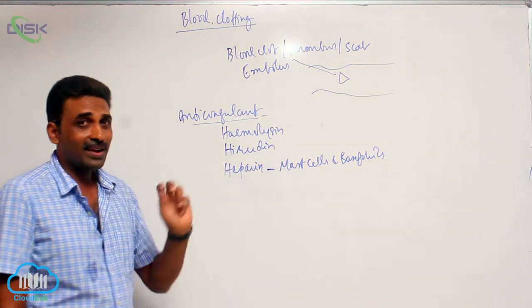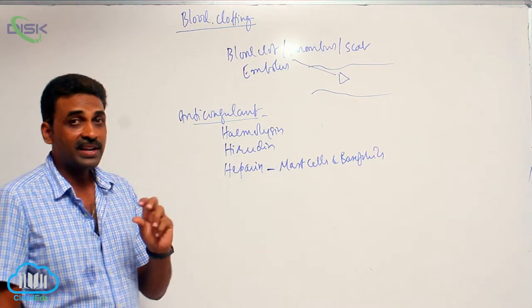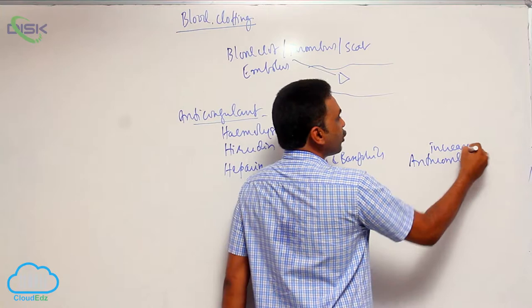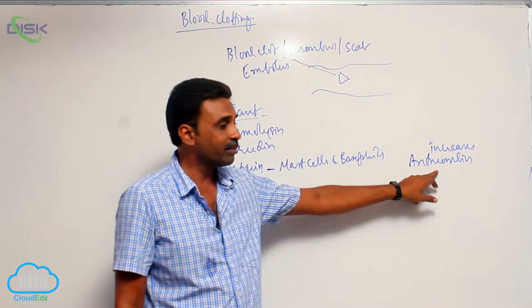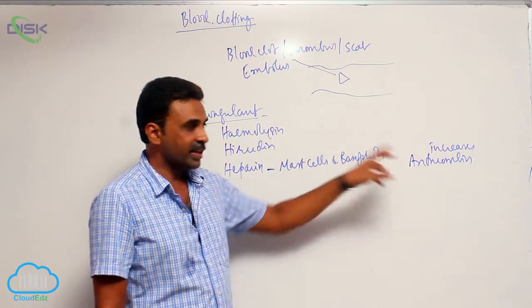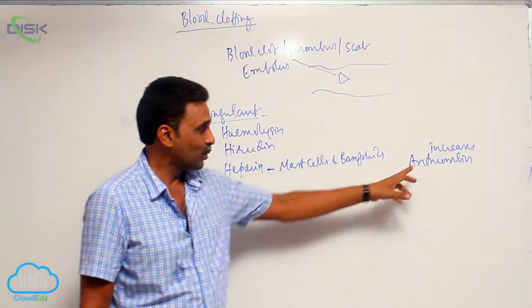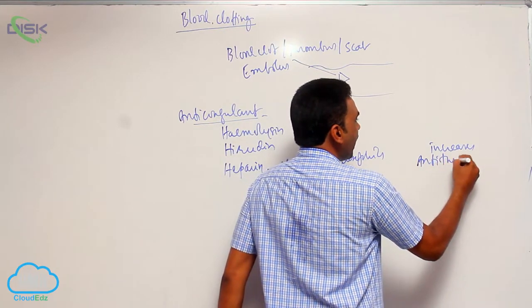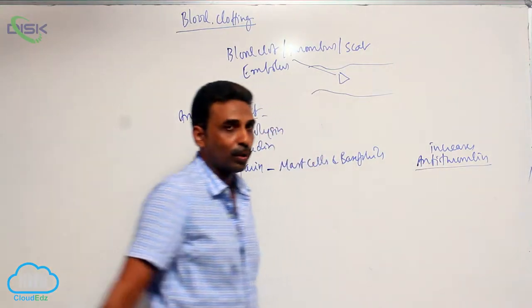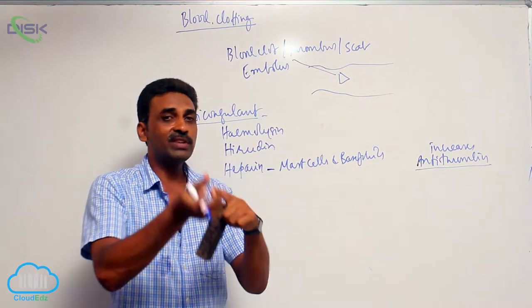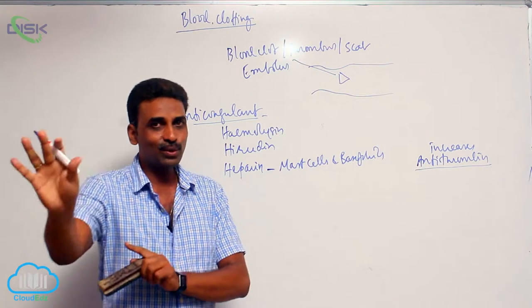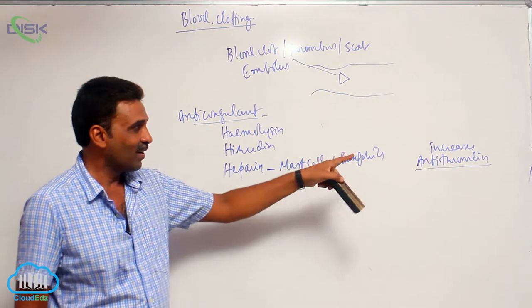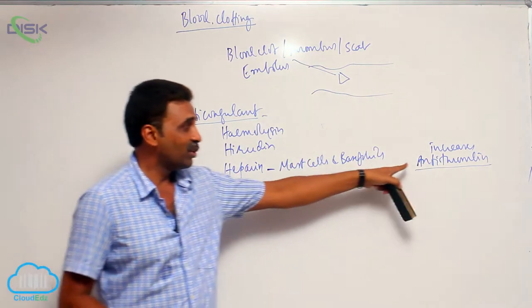Heparin works by increasing the activity of antithrombin. Antithrombin is a substance which acts opposite to thrombin — it binds with thrombin so that thrombin is not working. When there is no thrombin, there is no conversion of fibrinogen to fibrin, and therefore no blood clotting. So heparin acts by increasing antithrombin activity.